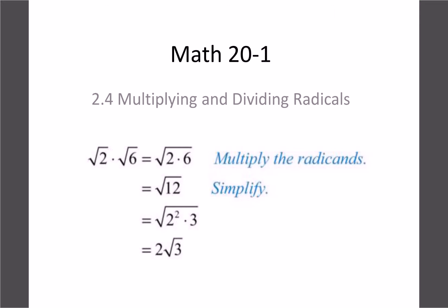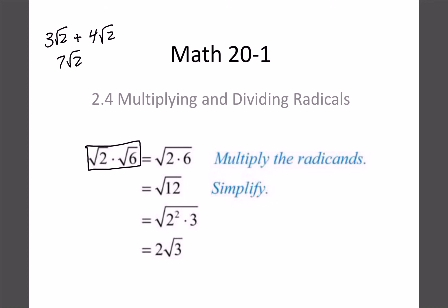Today's lesson we're going to look at multiplying and dividing radicals. We looked at adding and subtracting — remember with those they have to have the same radical number, so 3 root 2 plus 4 root 2 equals 7 root 2. Now with multiplying and dividing there are different rules. For example, root 2 times root 6 equals root 12, which simplifies down to 2 root 3.